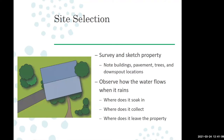The steps are not much different from choosing a site for any other garden: surveying and sketching out the property, noting buildings, pavement, trees, other hard surfaces, and downspout locations. It's best to work to scale. One trick is to pull up an online satellite map — Google Maps, Apple Maps — zoom in on your house, print it off, and trace around the hard surfaces so you can get proportions right without having to measure exact angles.